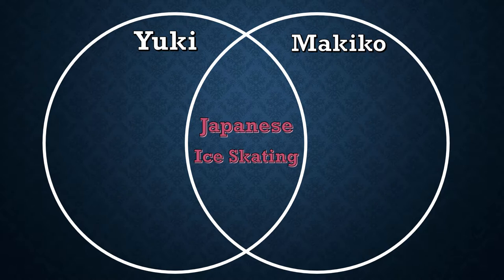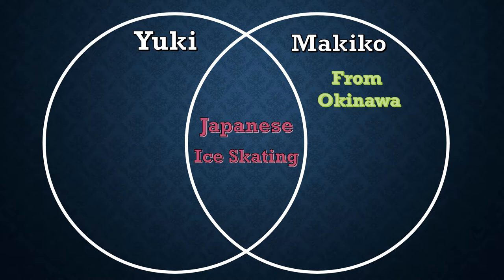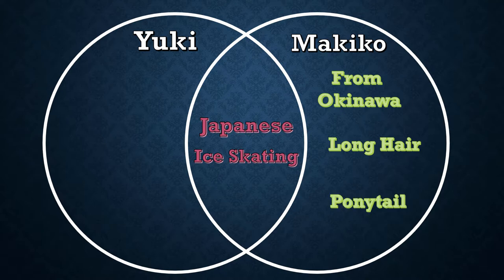Now, what is different about them? Let's start with Makiko first. What is different about her? Well, Makiko comes from Okinawa, so that is a difference. She also has long hair and wears it in a ponytail often. These are things that are different about Makiko.